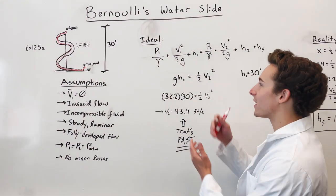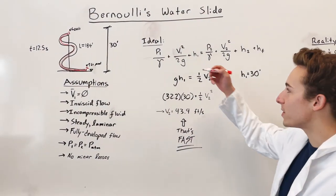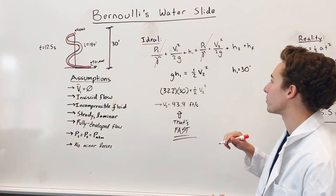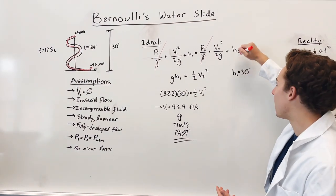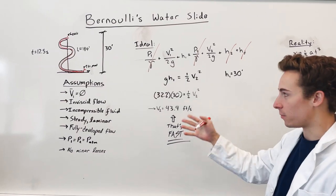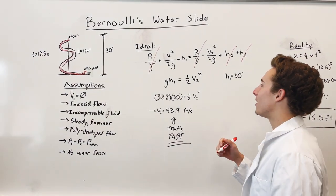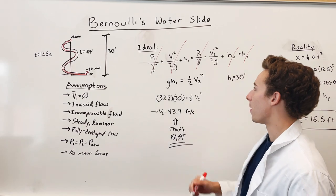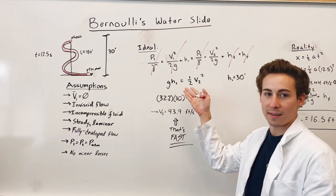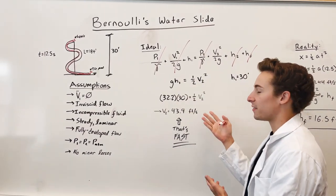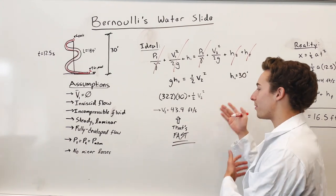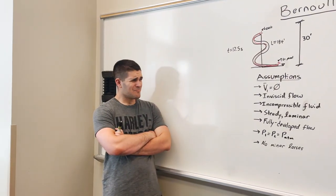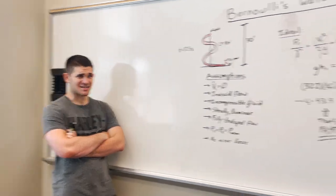We can take a look at the ideal case now. Pressure is atmospheric on both sides, so we can cross out pressure. Our ending height is also zero, there's no loss in the ideal case, and our initial velocity is equal to zero. This reduces to just height and velocity components. Doing a little bit of math, we can figure out that V2 is equal to 43.9 feet per second. That is fast!